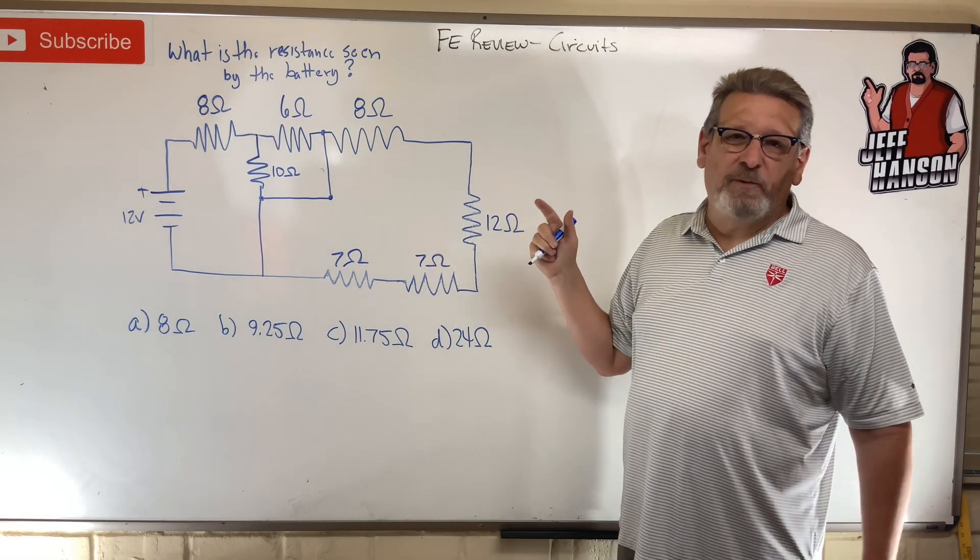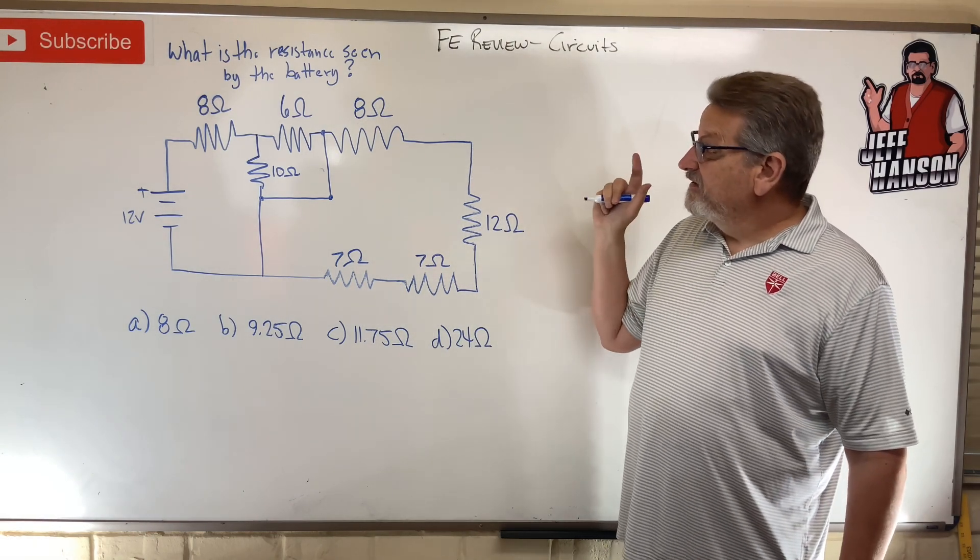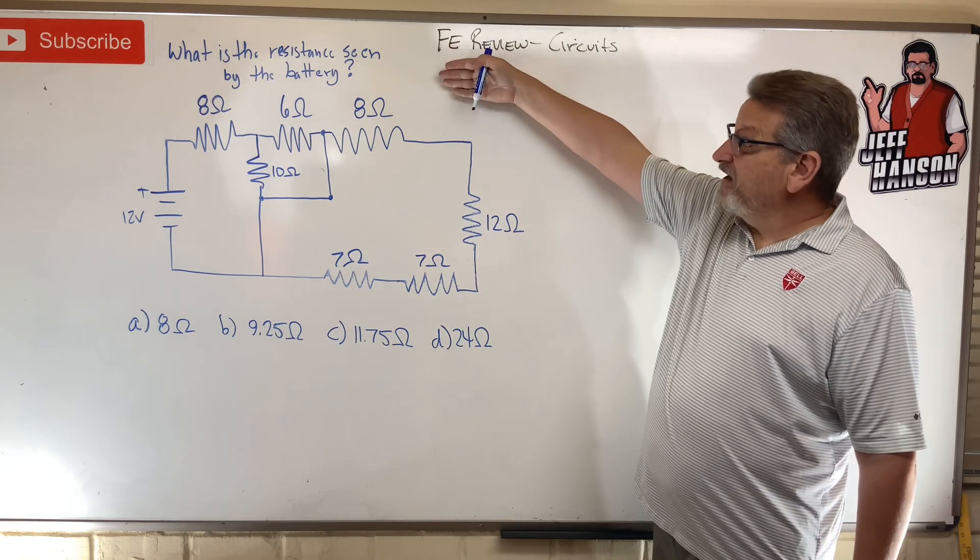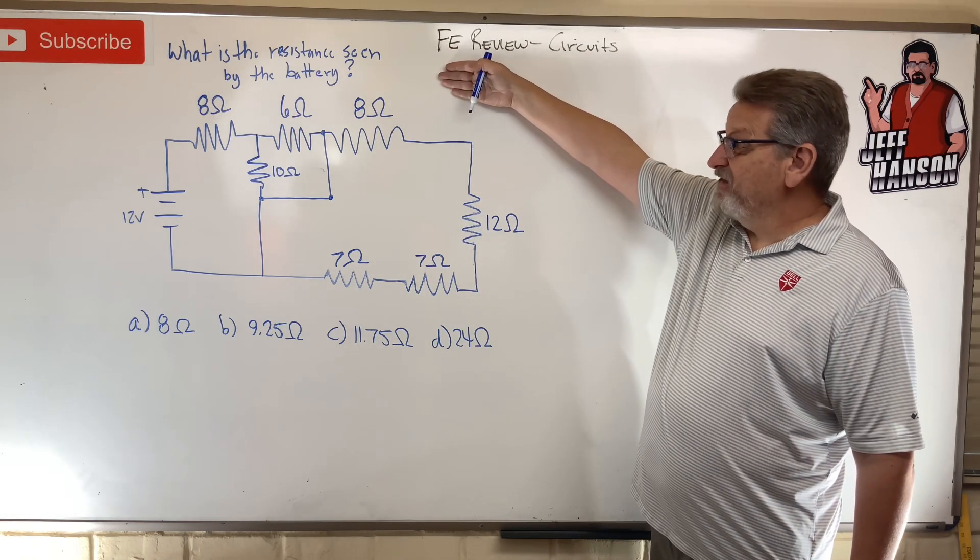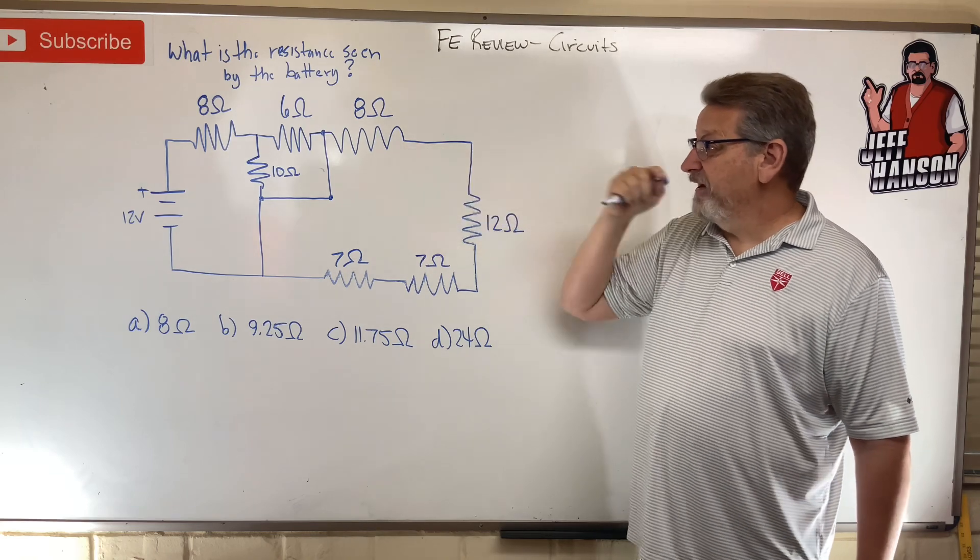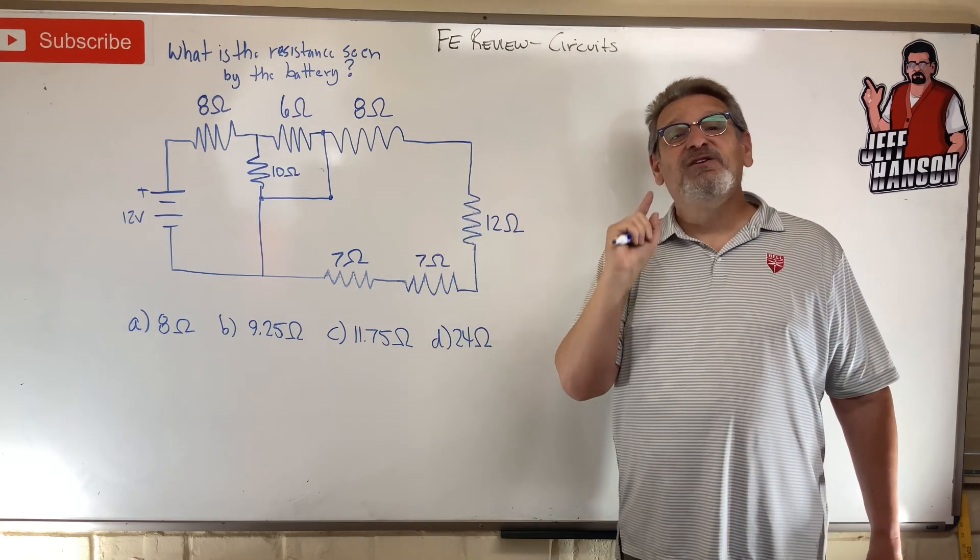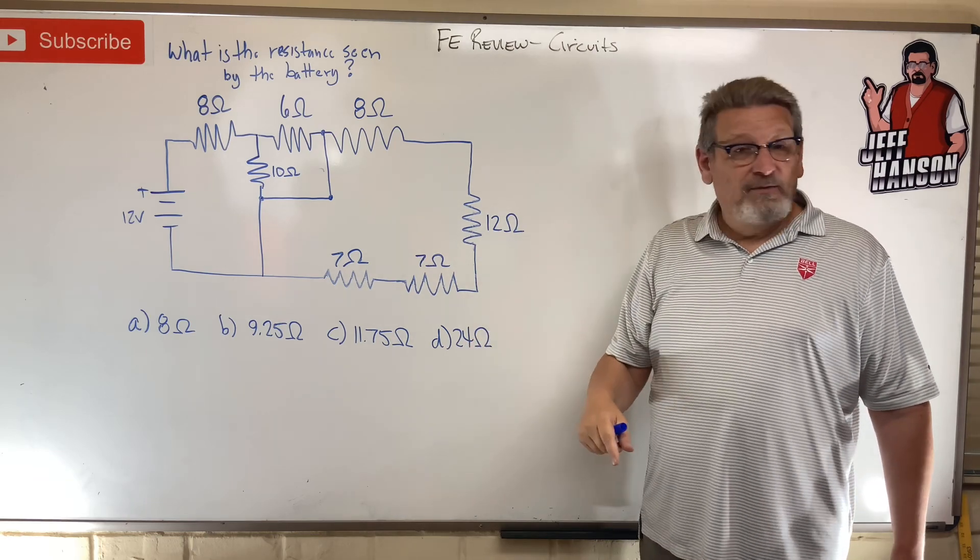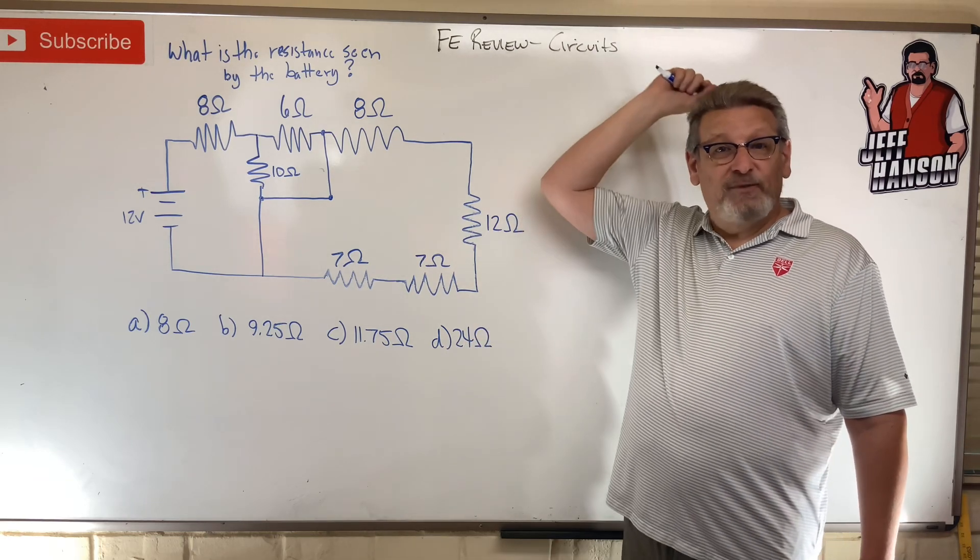Hey gang, welcome back. Every review problem on circuits. Okay, this one's a little bit harder than the last one. What is the resistance seen by the battery? There's the battery over there. Looks like a parallel circuit again. Here are your answer choices. Press pause, work it out. When you come back, I'm going to show you how to do it.